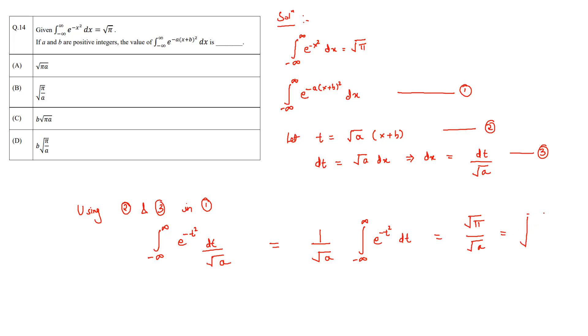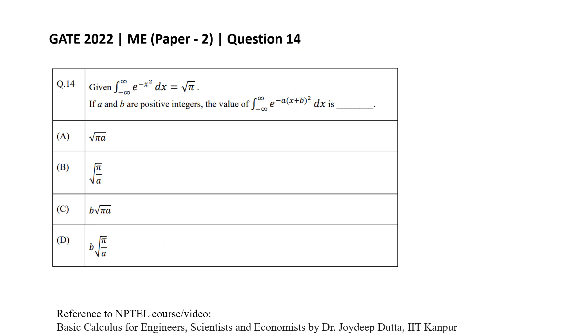So this becomes root pi over root a or simply just square root of pi by a. So the correct option is b. So we solved this question and the correct option was b, root pi over a.